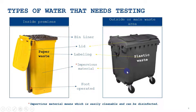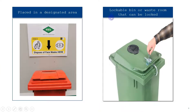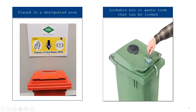For outside waste management, you do not need a bin liner - if you can arrange one it is fine, otherwise it is not mandatory. Another important point is there should be a designated area for the placement of bins. For example, if this bin is for disposal of PPE such as face masks, you need to mention it on the wall as well as on the bin itself.